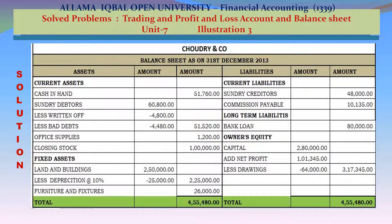Chowdhury & Company Balance Sheet as on 31 December 2013. Assets side — Current assets: Cash in hand 51,760; Sundry debtors 60,800; less bad debts written off 4,800; less bad debt reserve 4,480; net sundry debtors 51,520. Office supplies on hand 1,200; Closing stock 100,000. Fixed assets: Land and buildings 250,000; less depreciation 10% — 25,000; net 225,000. Furniture & fixtures 26,000. Total assets 455,480.